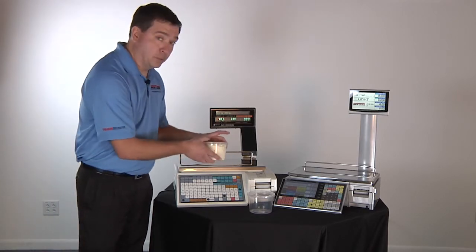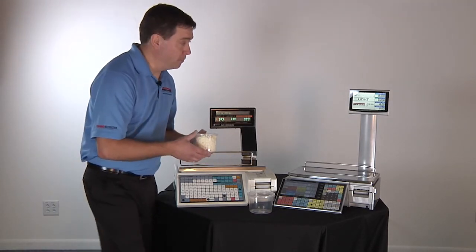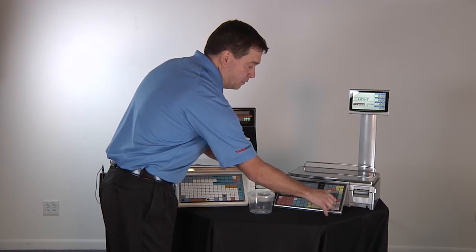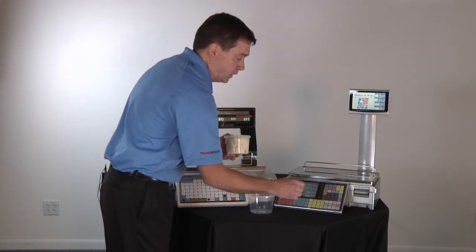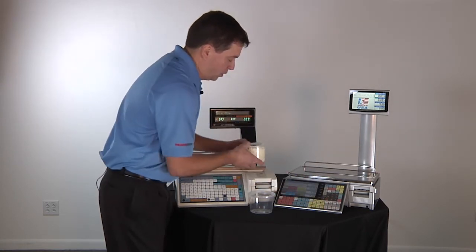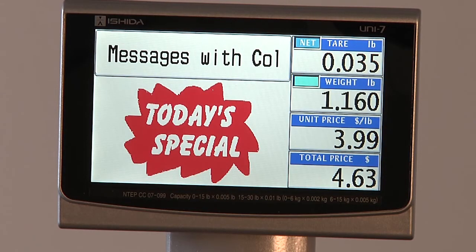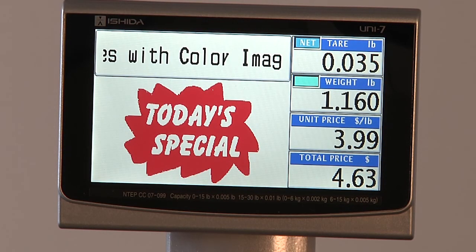When I take that same container of potato salad to my dual ranging scale and I enter in a 3.5 tare and a unit price of $3.99, place the potato salad, I get a total price of $4.63.